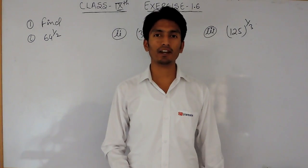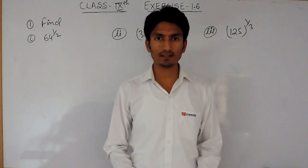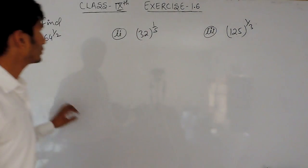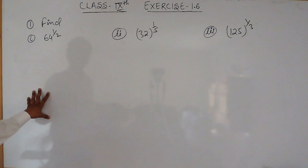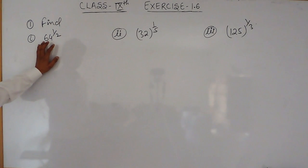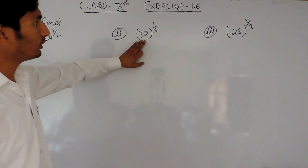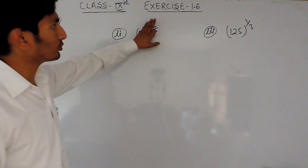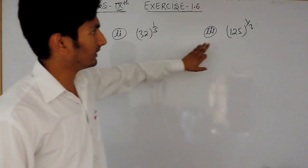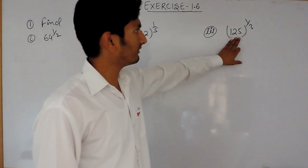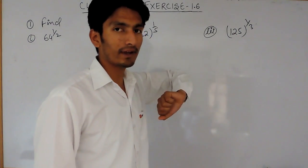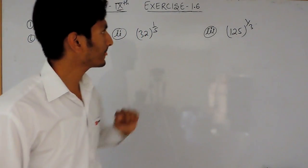Hello everyone, we are from True Maths and in this video we are going to solve the first question of exercise 1.6. Here we have to find what will be the value of 64 raised to power half, 32 raised to power 1 upon 5, and 125 raised to power 1 by 3.